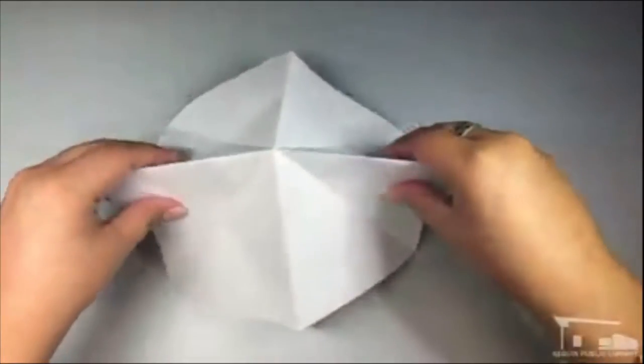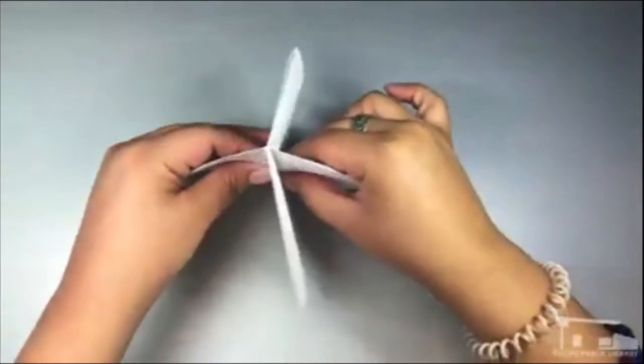Take the two side creases and gently pinch them closed, then together. Where they meet in the middle, you can lay it flat like a diamond.